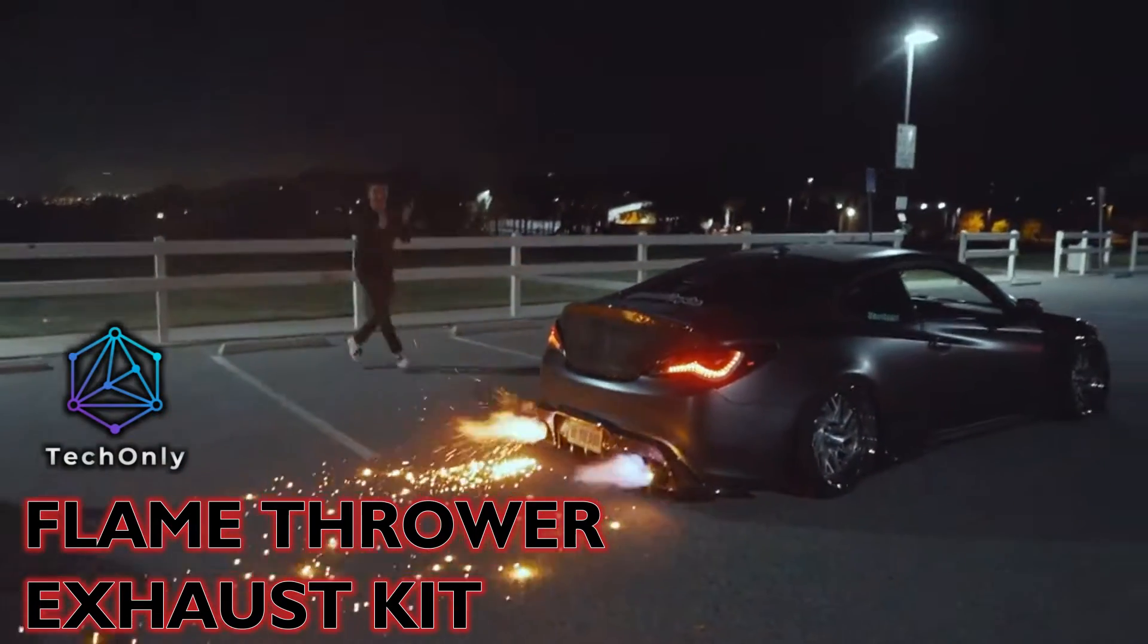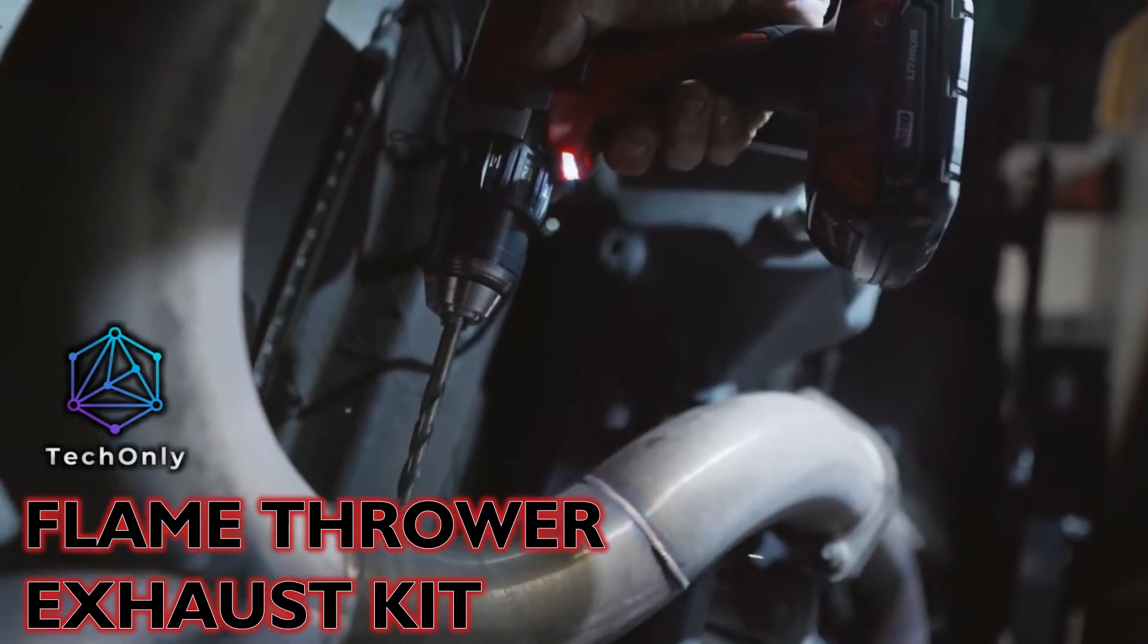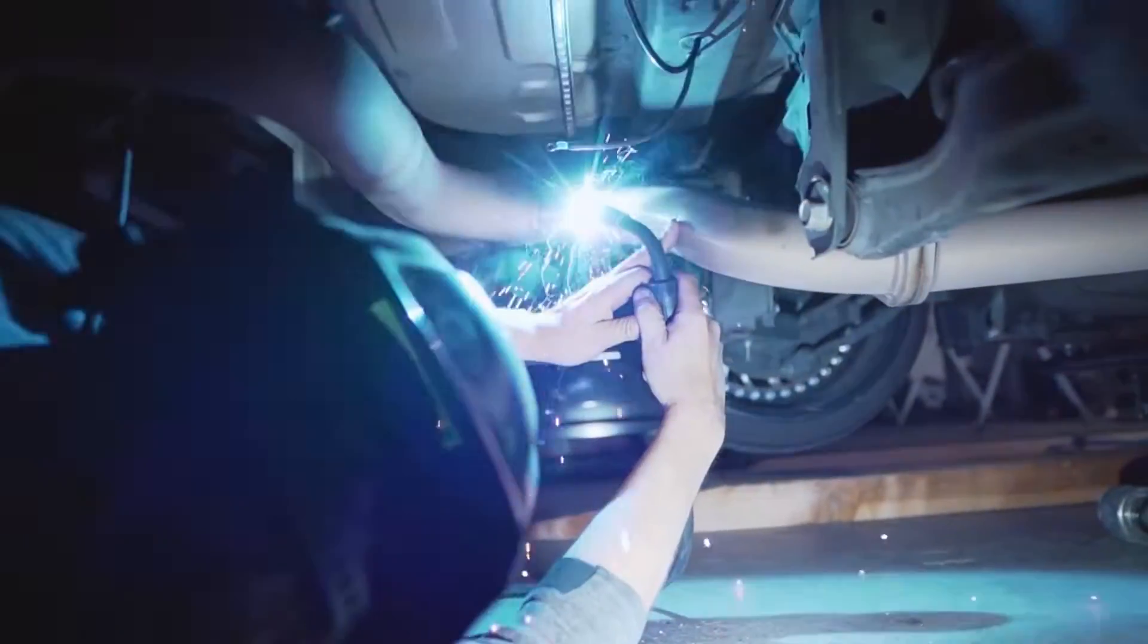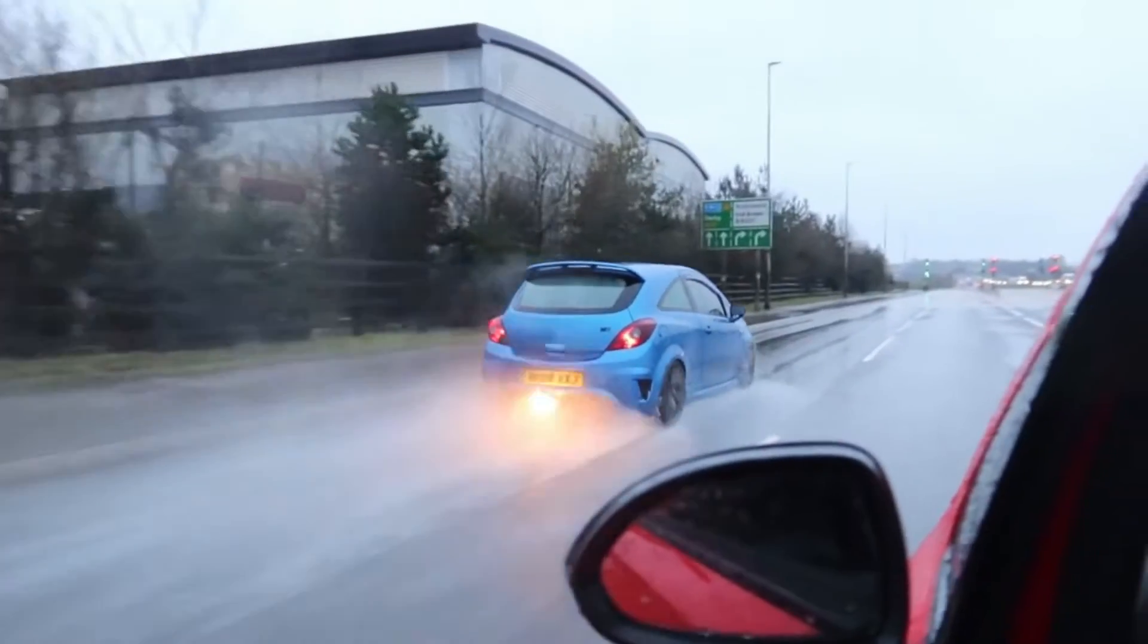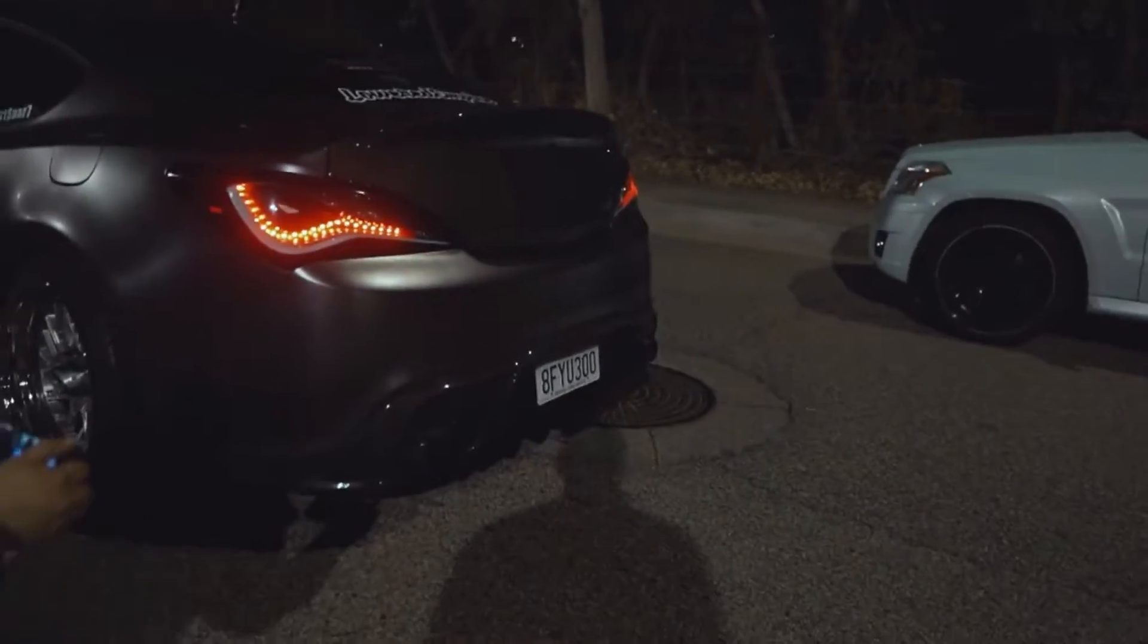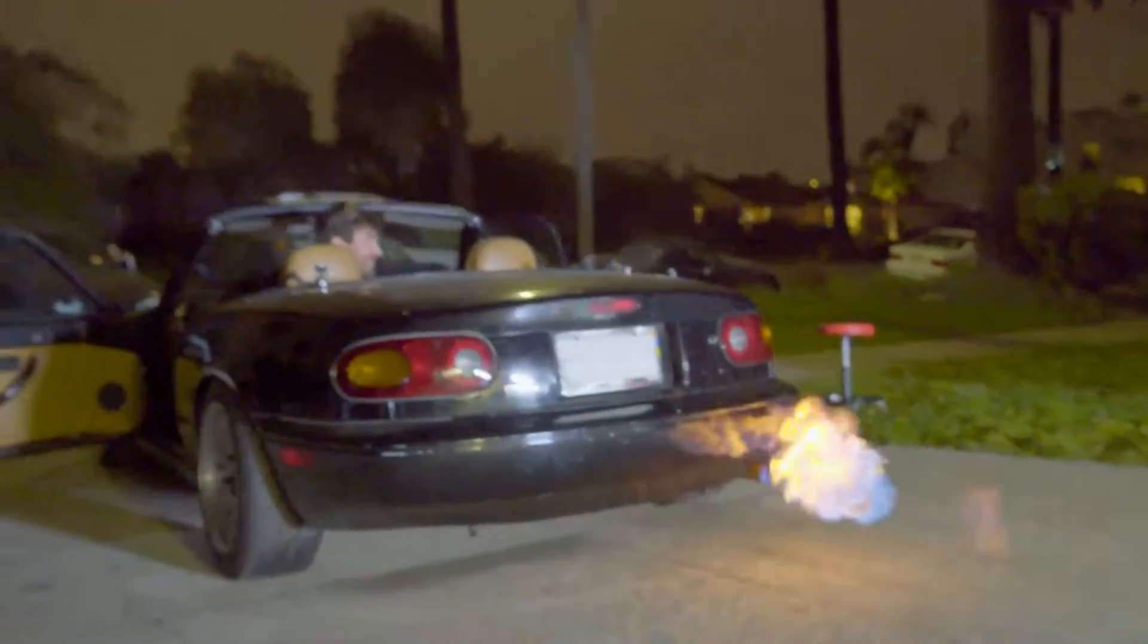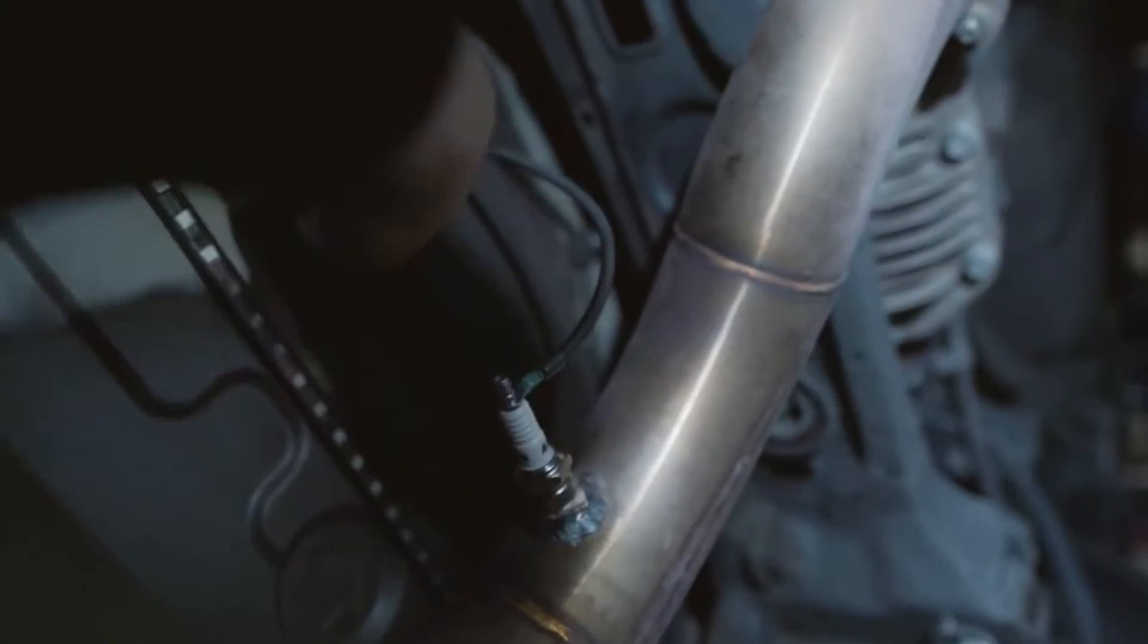When we see something like this, it's obvious why it was banned on Amazon. This is a flamethrower kit for exhaust, and it can be activated through a button-controlled electronic circuit that is wired to the car's ignition. The system also consists of a spark plug installed near the tip of the car's exhaust.